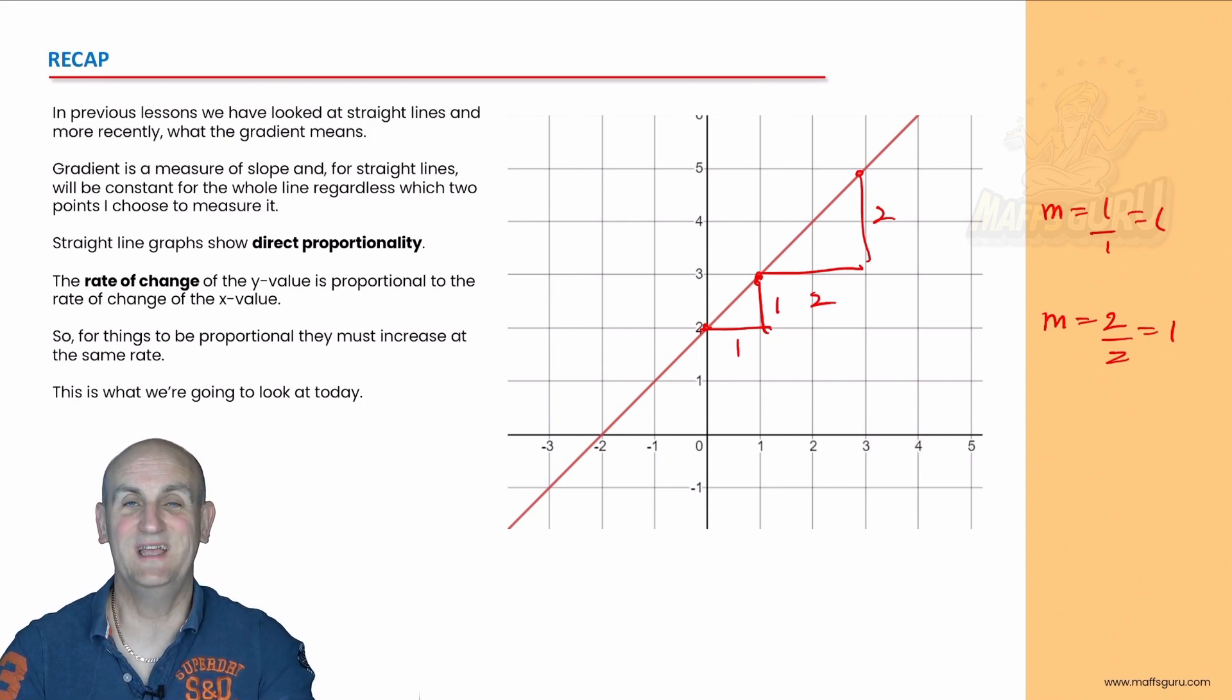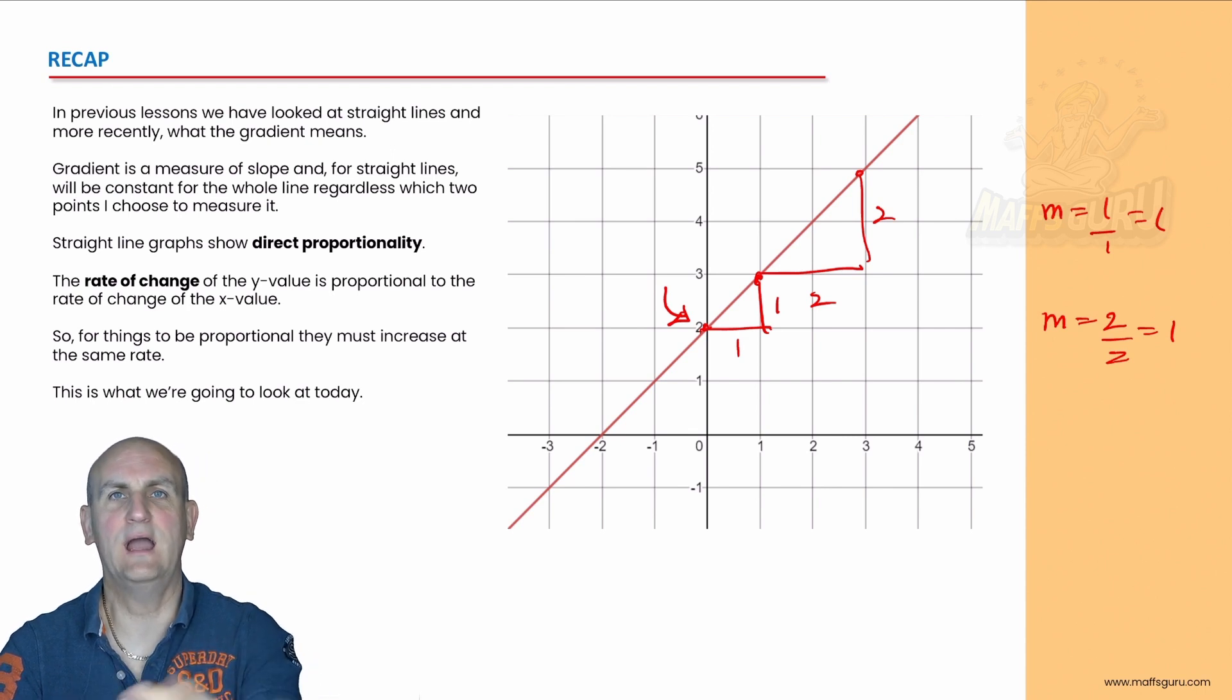We notice for that straight line that the gradient is the same all the way along it. Believe it or not, that would also suggest that the line is proportional. Generally speaking, proportionality means that the graph goes through point zero zero. But this one here you notice doesn't. So how do we link gradient and proportionality? Well, that's the point of this video.